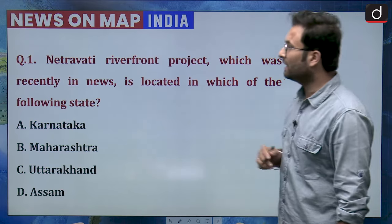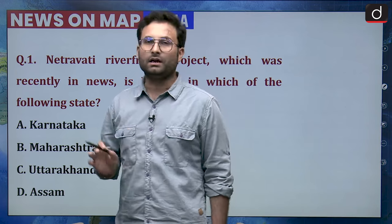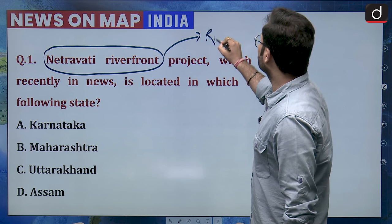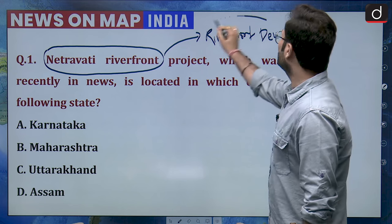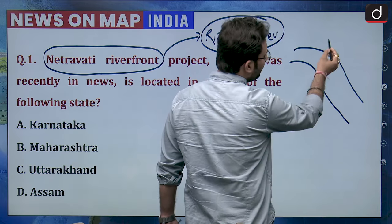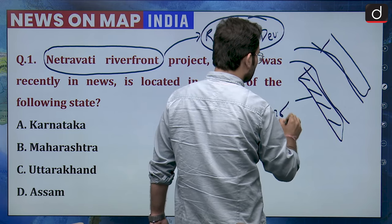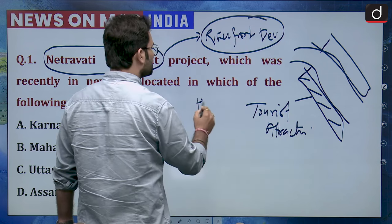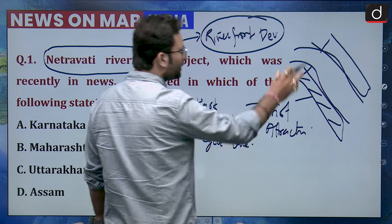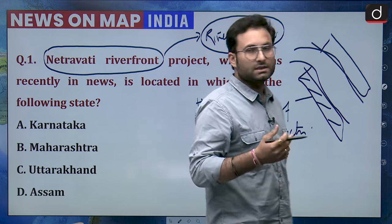Moving to the first question of the day: the Netravati riverfront project, which was recently in news, is located in which state? Options are Karnataka, Maharashtra, Uttarakhand, or Assam. This project involves riverfront development — making the riverfront area more attractive alongside the river by building parks, walking lanes, and cycling lanes so that tourism can be boosted in that particular area.